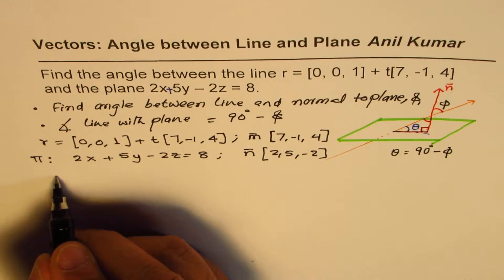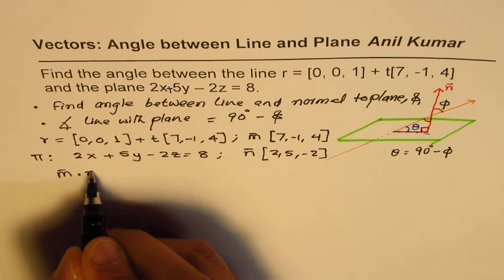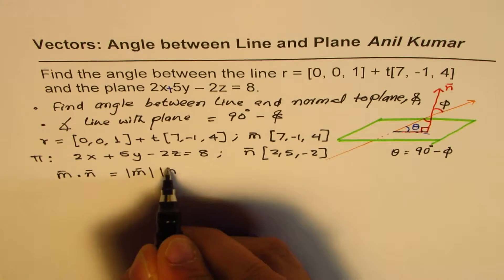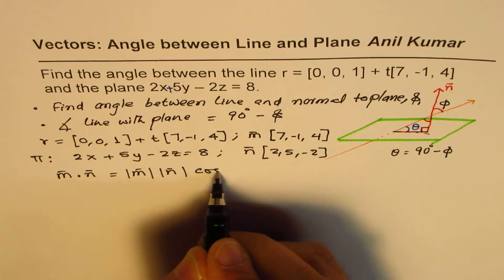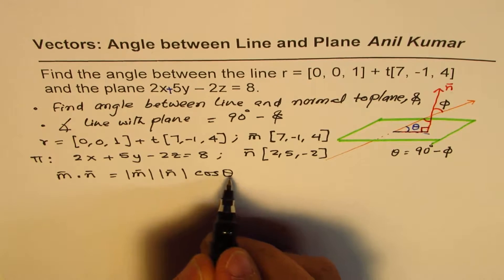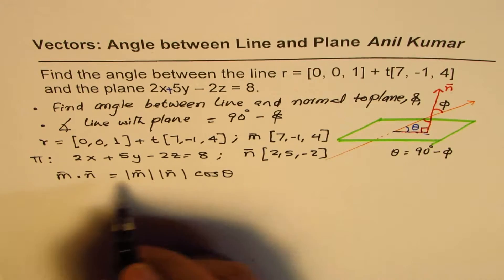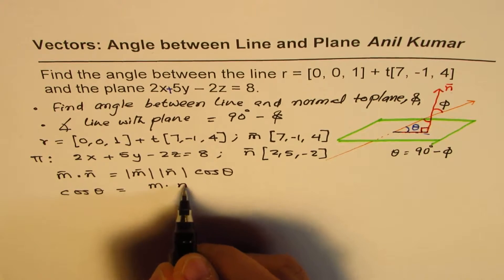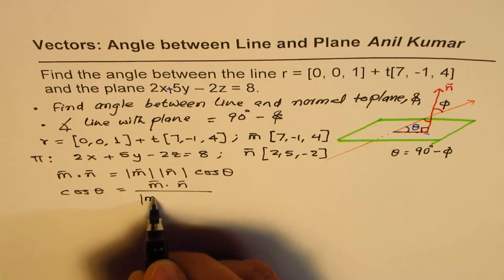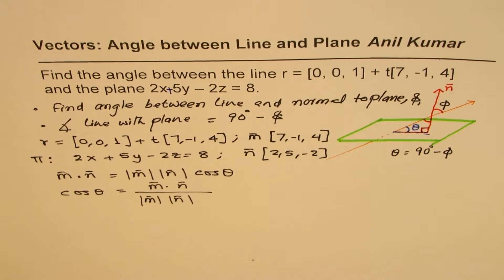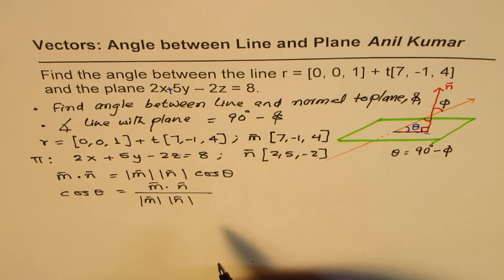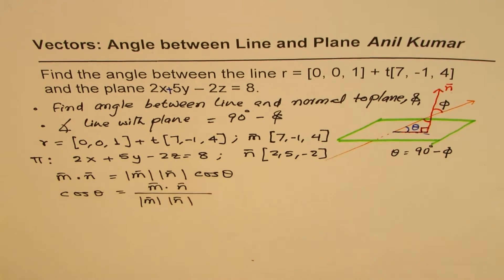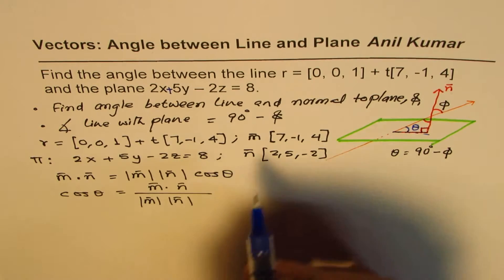We will do dot products. So we know M · N equals magnitude of M times magnitude of N times cos φ. And so we can find what φ is. We say cos φ equals M · N divided by their magnitudes. So that is the formula for us.